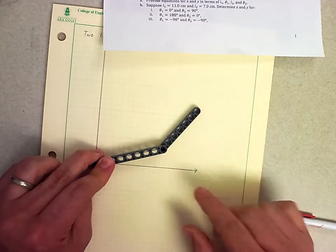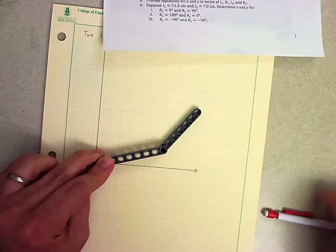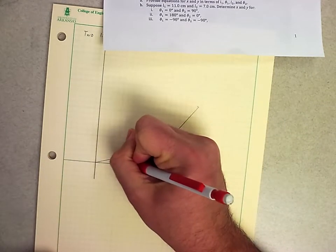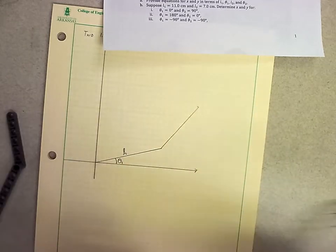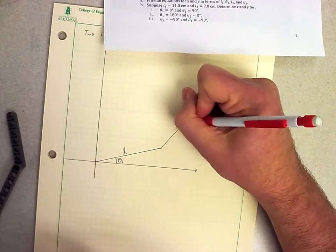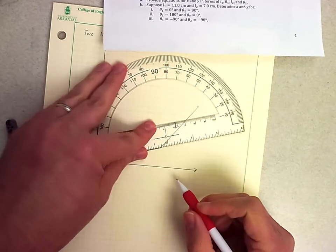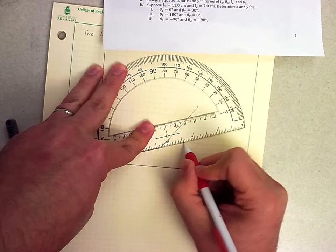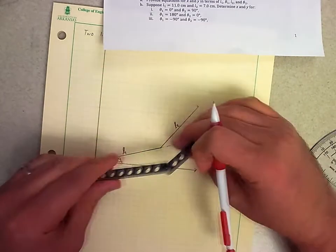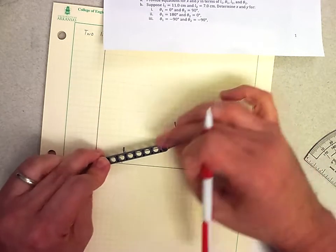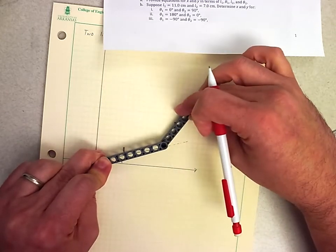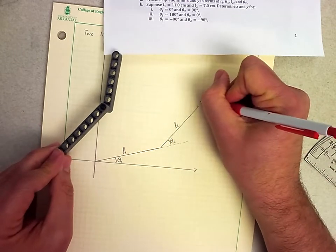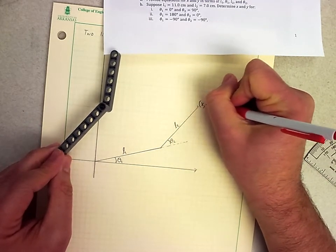So what we want to be able to do is given the length of this first link, we'll call that L1, and the angle it makes with the axis, we call that theta1. And then the length of the second arm, L2, which is not necessarily the same value, and the angle that it makes from the line of action of the first one. So from wherever this one stops, what does that new angle make? We'll call that theta2. How can we figure out our point xy?